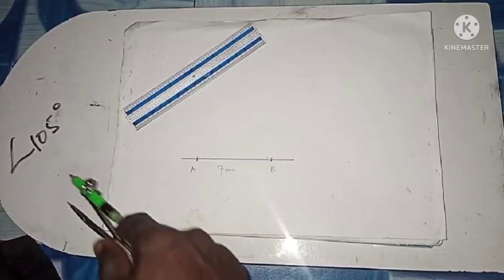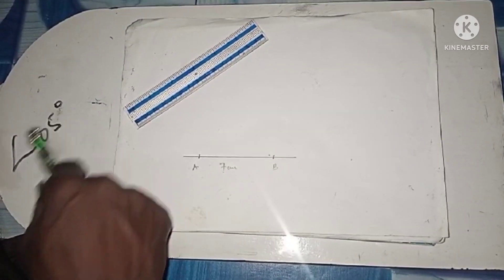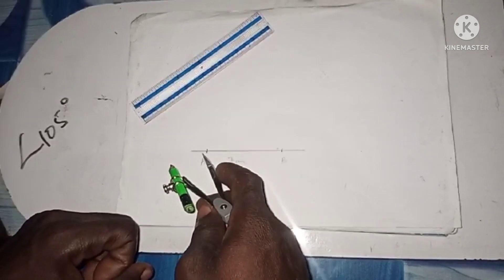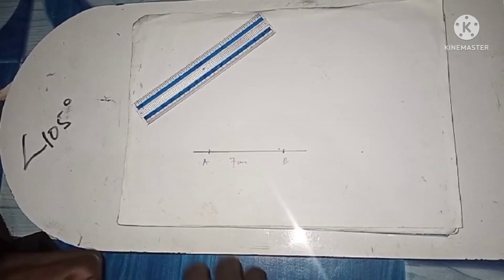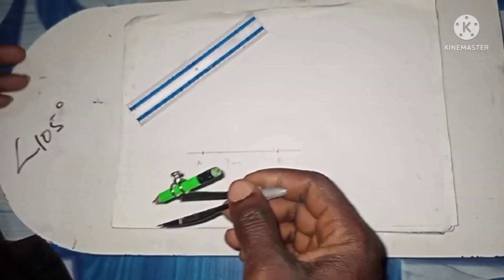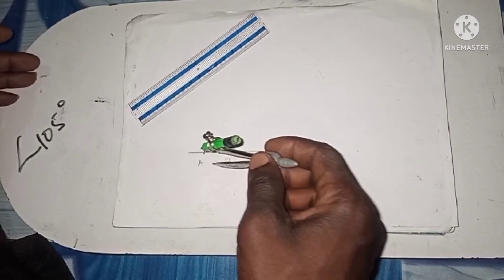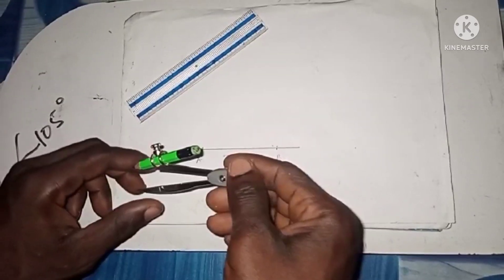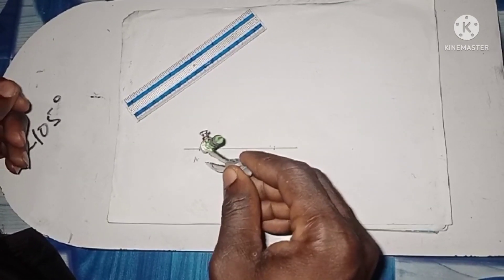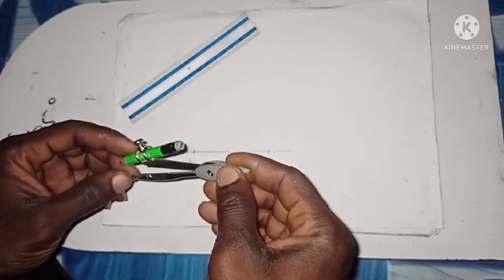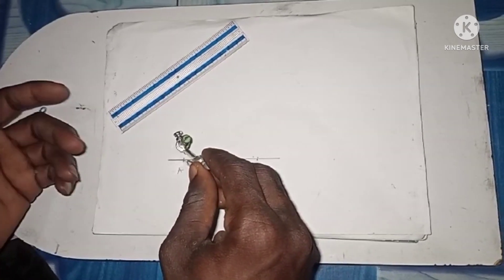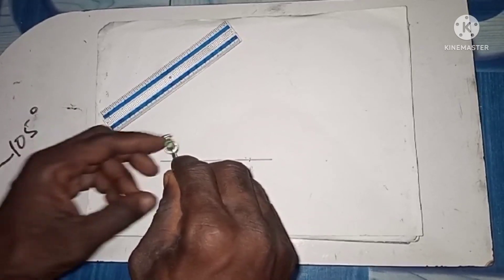We want to construct angle 105 degrees at point A. This is our destination and it is very important that you construct it at A. That is why I made a disclaimer at the beginning: you should know how to construct certain angles. The trick here is that you must first construct 60 degrees, and then maybe a straight angle, or you can construct 90 degrees.